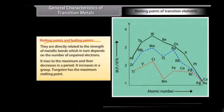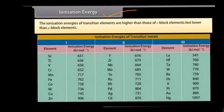Melting and boiling points are directly related to the strength of metallic bonds, which in turn depend on the number of unpaired electrons. Looking at the graph showing melting and boiling points of the 3d, 4d, and 5d series: it rises to a maximum and then decreases in a period. It increases in a group. Tungsten has the maximum melting point — you must remember that tungsten has the maximum melting point.